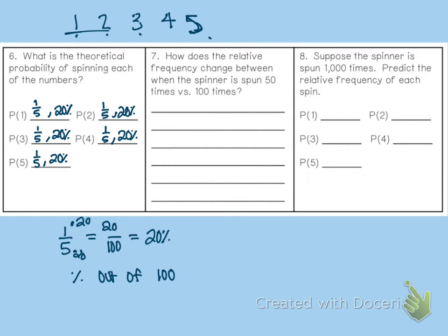And then how does the relative frequency change between when the spinner is spun 50 times versus when the spinner spins 100 times? So we already said that when the number of trials increase, what happens? We said this earlier. That if we keep doing more and more trials, then we get closer to what? So when we're doing trials, that's called experimental frequency.